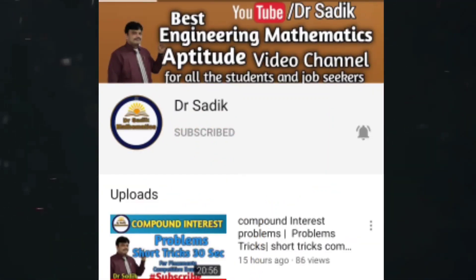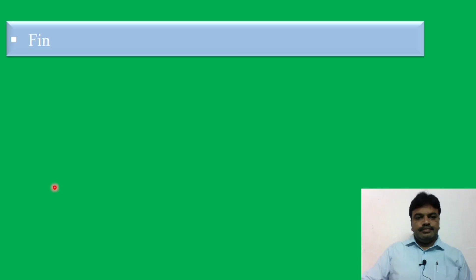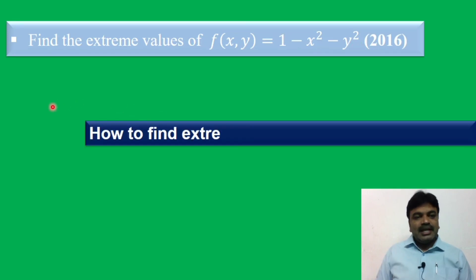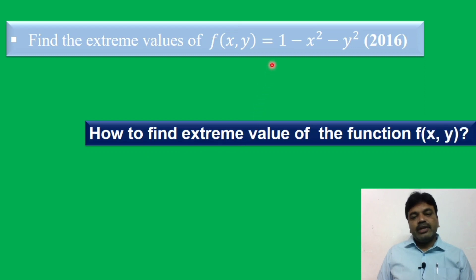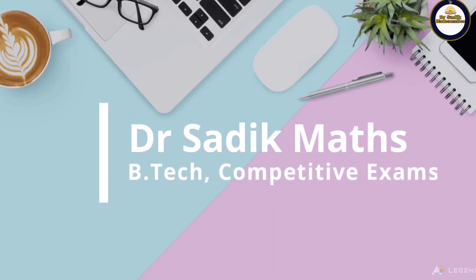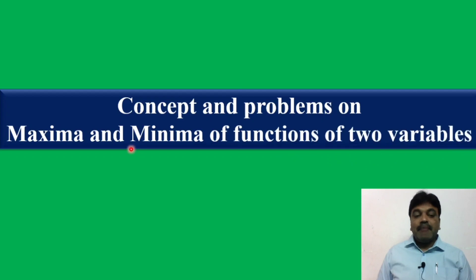Subscribe to Dr. Sadiq Mathematics channel for getting more online videos. Find the extreme values of f(x,y) = 1 minus x square minus y square. Today we discuss the concept and problems on maxima and minima of functions of two variables.